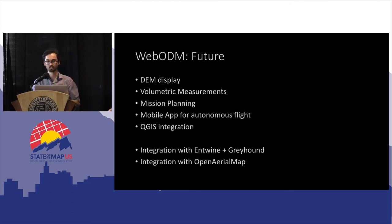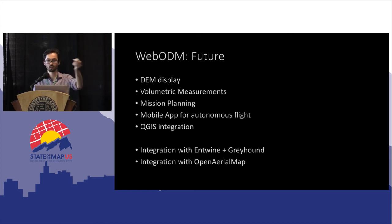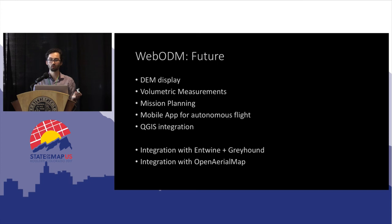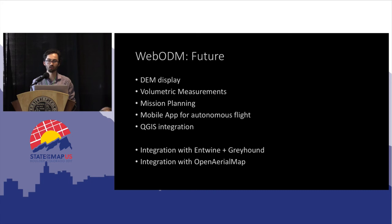To review, with WebODM we want to integrate all of those things: being able to display an elevation model, do volumetric measurements. If we could control the mission planning itself — how you fly the drone from start to finish — we'd improve a lot of dataset gathering errors like not having enough images or not having good enough overlap. Integrating into QGIS would be great too. For massive point cloud datasets, we need something like Entwine and Greyhound for hosting and viewing. We also want one-click integration with OpenAerialMap.